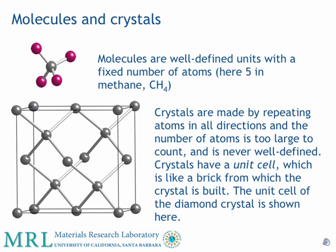Before we talk about the different structures of carbon, it is important to understand that crystals are distinct from molecules. Molecules are well-defined units with a fixed number of atoms. For example, in methane, we have five atoms — four hydrogen and one carbon atom.